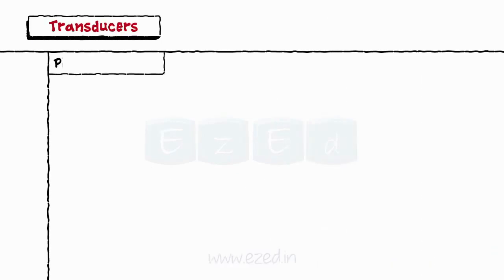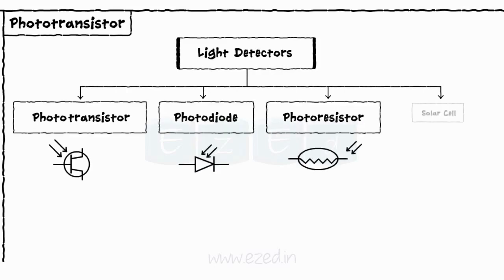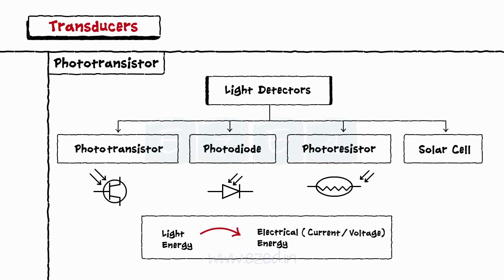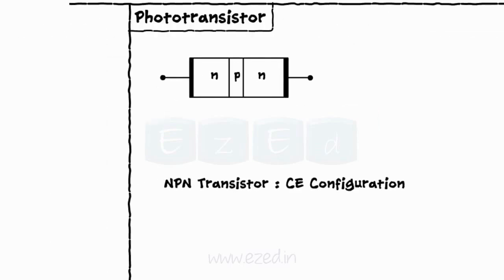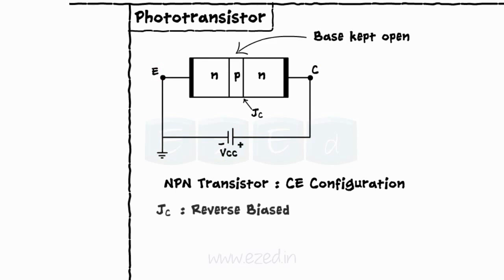Next, we will study about the phototransistor. A phototransistor belongs to a family of light detector devices such as photodiodes, photoresistors, solar cells, etc., which convert light energy into electrical energy as current or voltage as per their application. A phototransistor is a light-sensitive device consisting of an NPN transistor in CE configuration, with the base of the transistor open. A direct voltage VCC is applied between the emitter E and the collector C, so that the collector junction JC is reverse biased and the emitter junction JE is just forward biased.